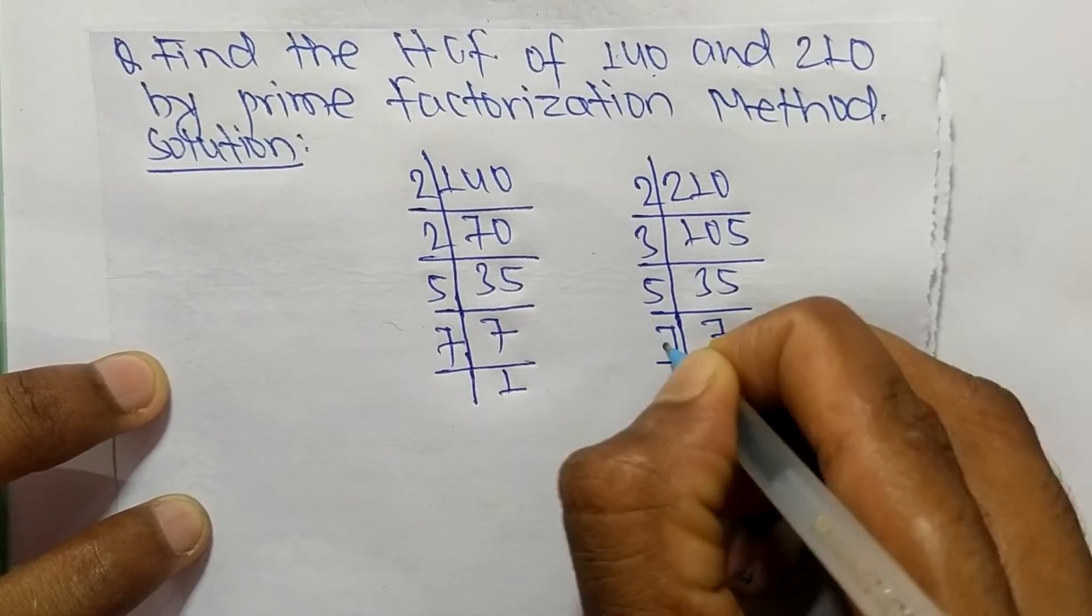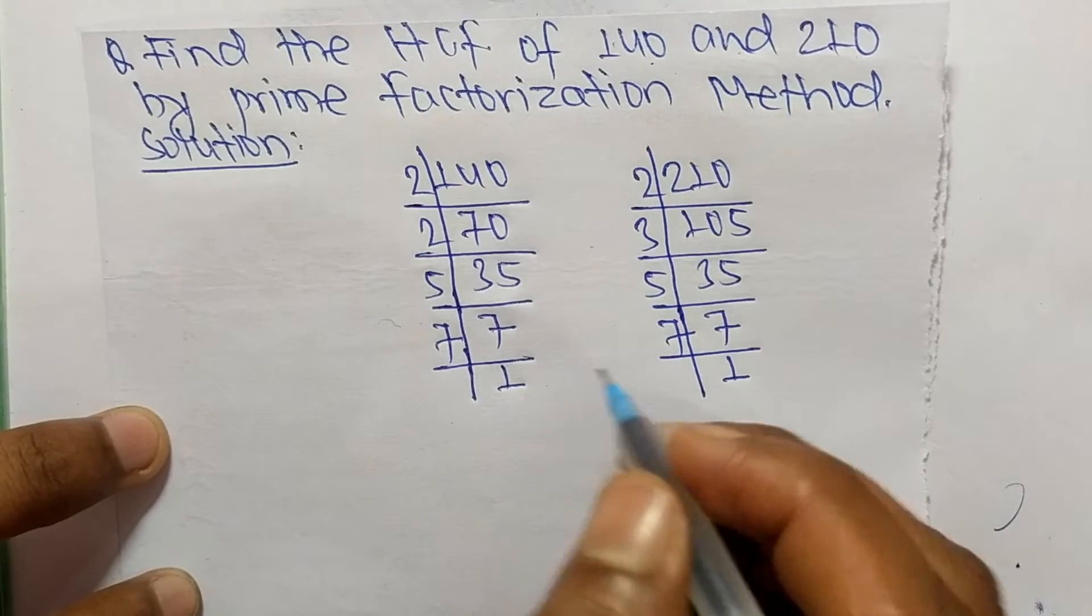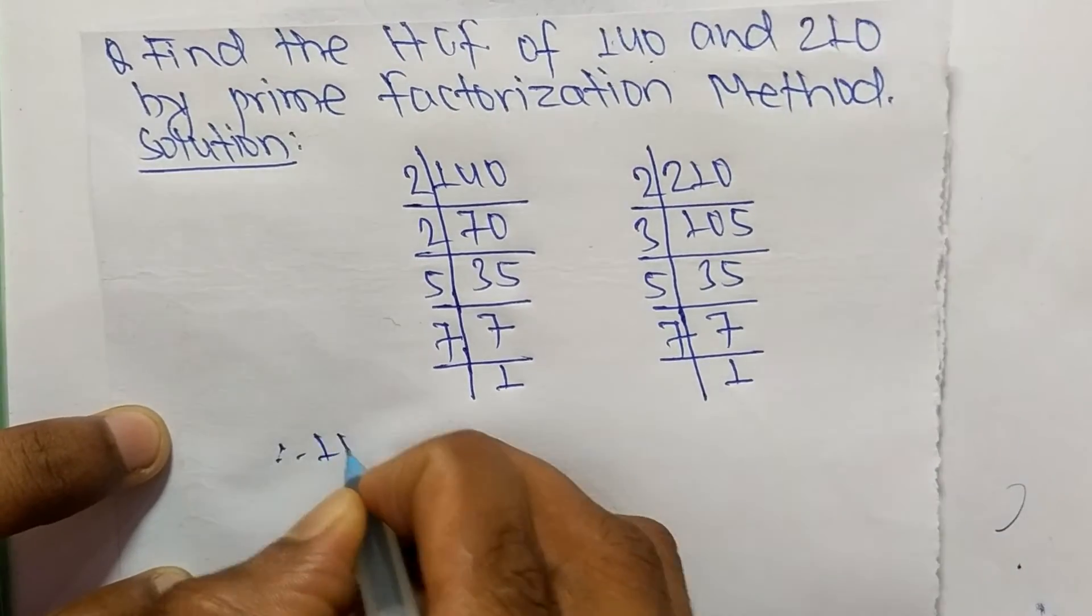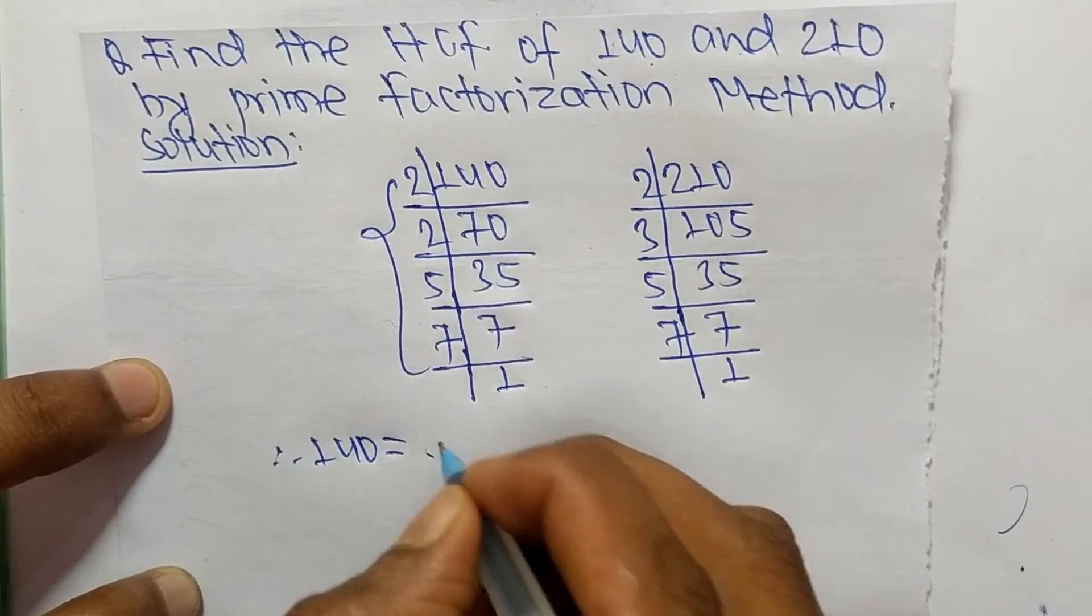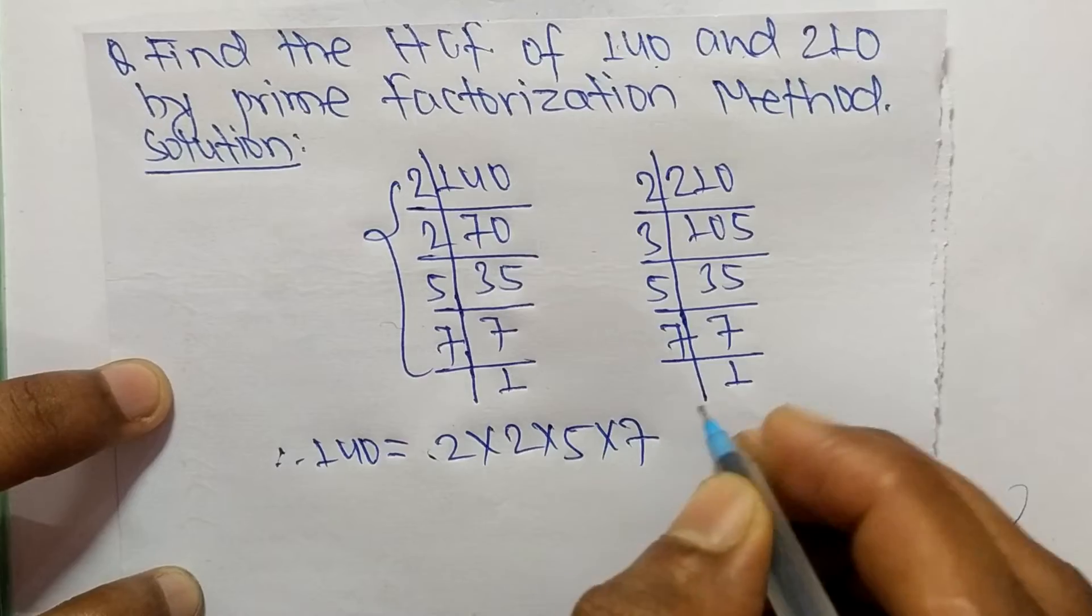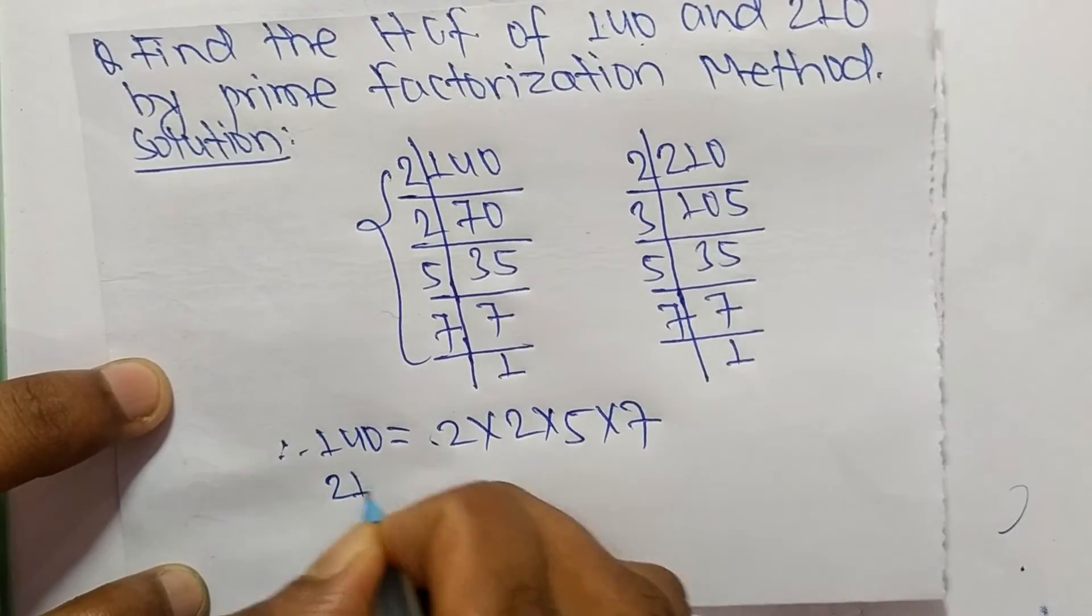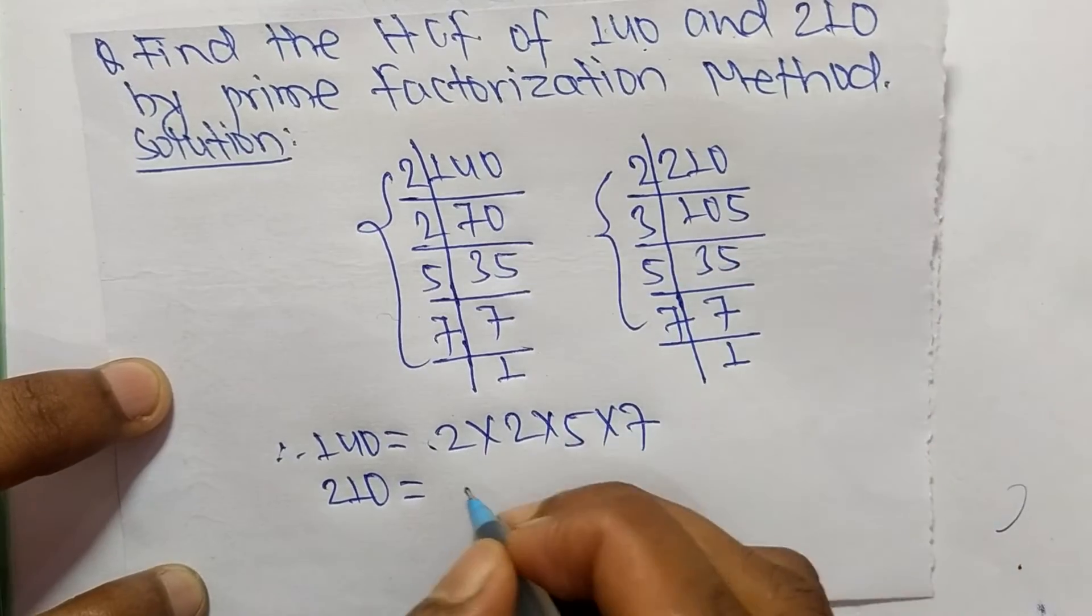From these prime factors we can write 140 equals 2 times 2 times 5 times 7, and 210 equals 2 times 3 times 5 times 7.